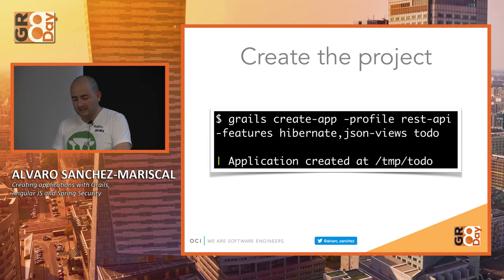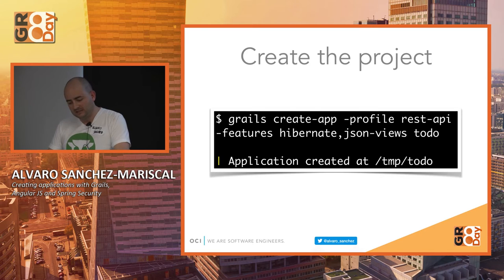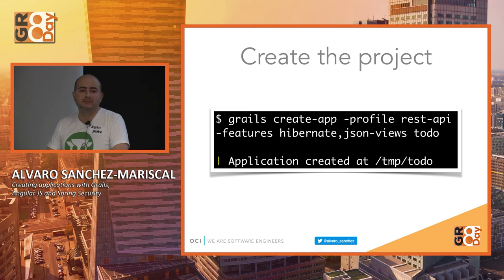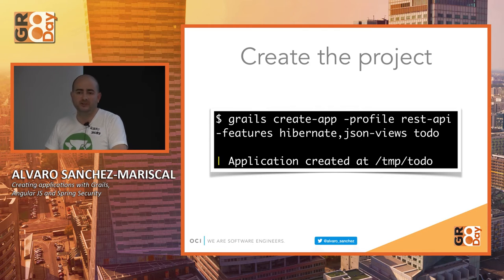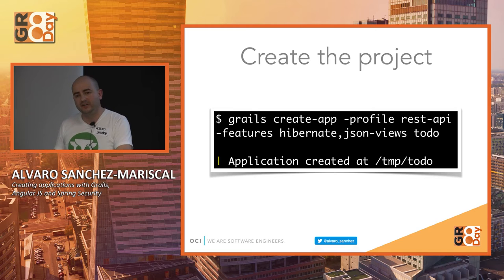To get started, you use the create-app command and specify the REST API profile. Profiles bring optional features with auto-completion in the CLI. You can see what features are available, and features depend on the profile. For instance, if you choose the Hibernate feature, all the Hibernate plugins get installed. There's also a MongoDB feature, a JSON views feature, and a security feature — depending on the feature you choose, you'll have more or fewer things in your build.gradle.